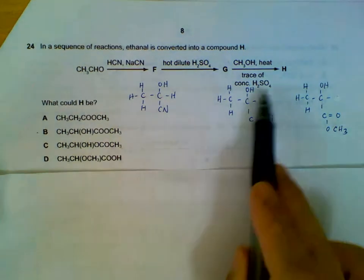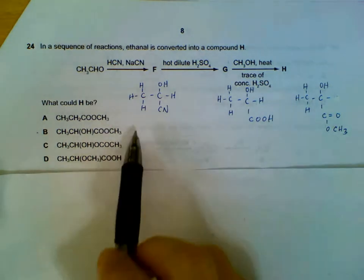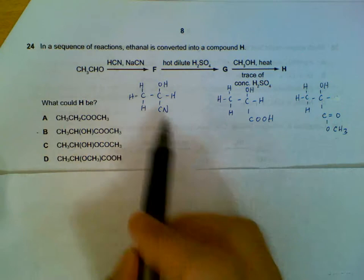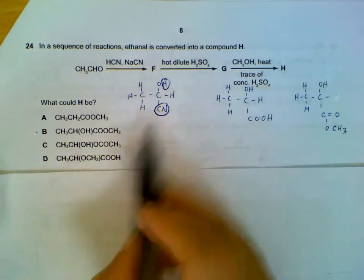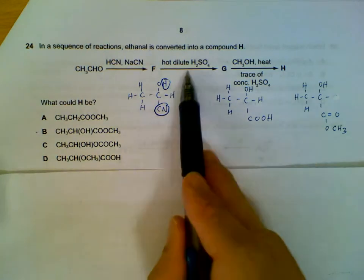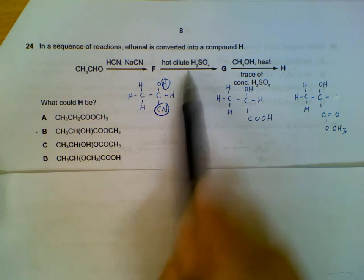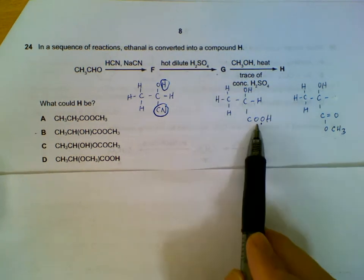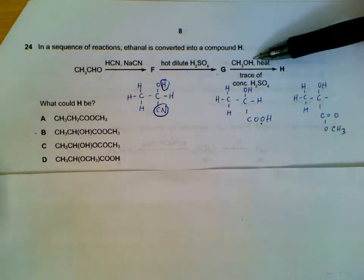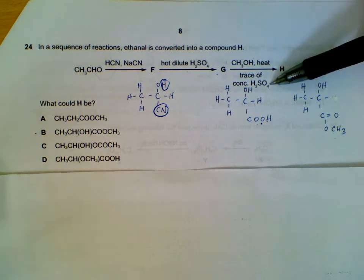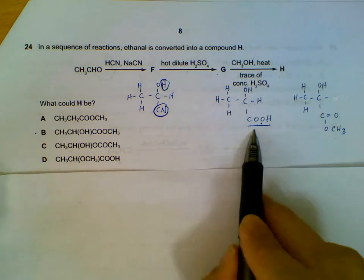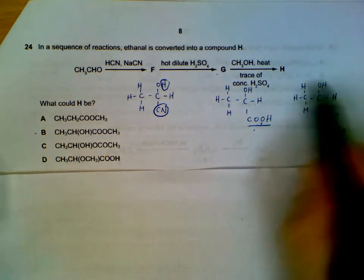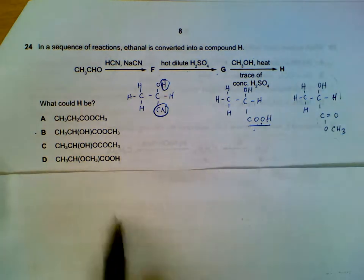Question 24: Converting ethanal into an ester. Step by step: using HCN or NaCN, a step-up reaction adds CN to ethanal. Then acid hydrolysis with HCl or H₂SO₄ converts the CN group into a COOH group, giving product G. Adding an alcohol with concentrated sulfuric acid causes esterification of the carboxyl group, producing the final ester product, which is option B.